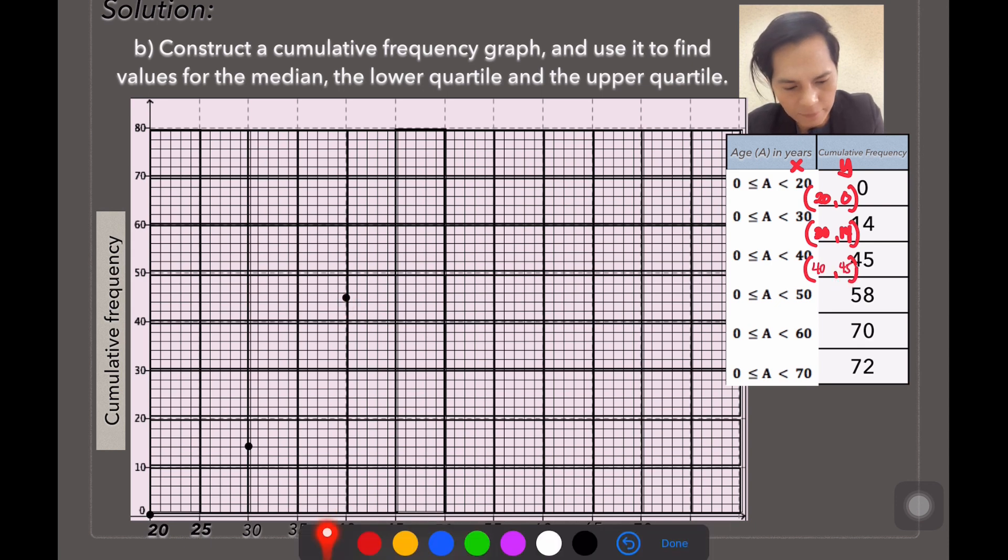Next one is 50 and 58. Next one is 60 and 70. And the last one is 70 and 72. And then we are going to connect the dots smoothly.